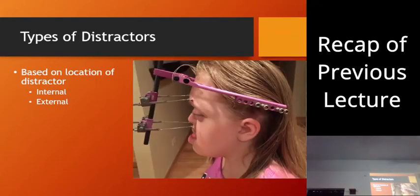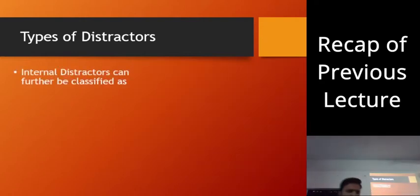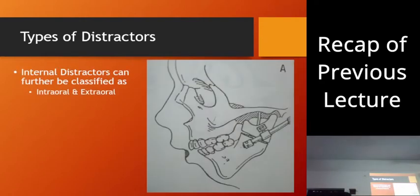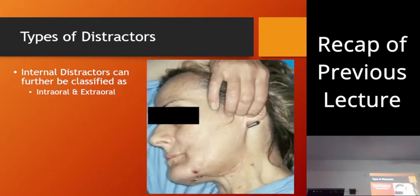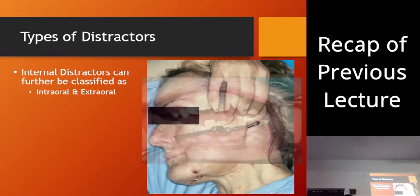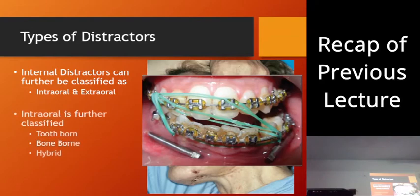This is another distractor using a halo frame. Internal distractors can be classified as intraoral and extraoral depending on the presence of the activation arm. If the activation arm is outside, it is called an extraoral distractor. If the activation arm is intraoral, it is an intraoral distractor.